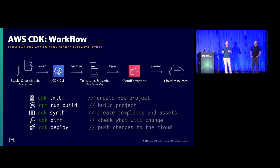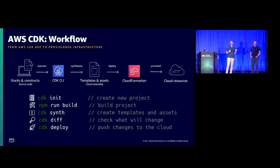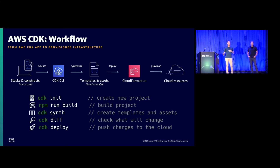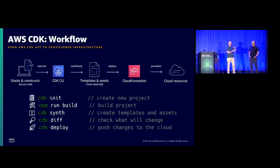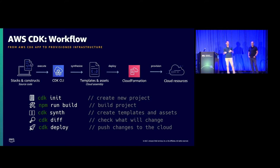The workflow is pretty linear — similar to any other development: write some code, build some code, deploy some code. Initializing a new project gives you all the bootstrapping and scaffolding you need. As you write your code, you build it with type checking — using TypeScript, that's `npm run build`, which runs the TypeScript transpiler. Then you synthesize your CloudFormation templates and assets, called a cloud assembly. This takes what you've written and synthesizes CloudFormation as output — including your Lambda code — and sends it to CloudFormation for deployment. CDK diff will diff what's in your AWS account versus what you have defined, then deploy.